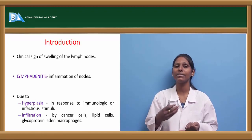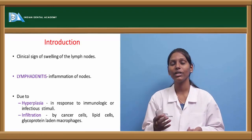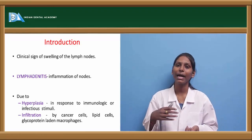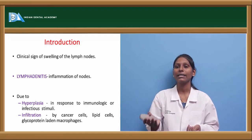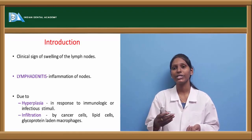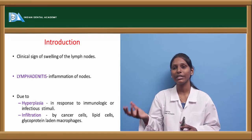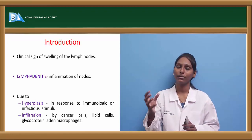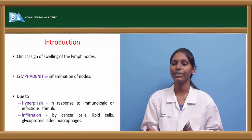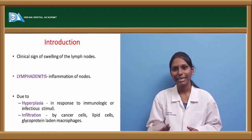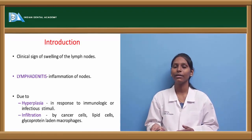Hyperplasia is an increase in number of cells, occurring in response to any immunological or infectious stimuli. Infiltration is because of any cancer cells or tumor cells that come and reside within these lymph nodes — usually seen with cancer cells, lipid cells, or glycoprotein-laden macrophages.